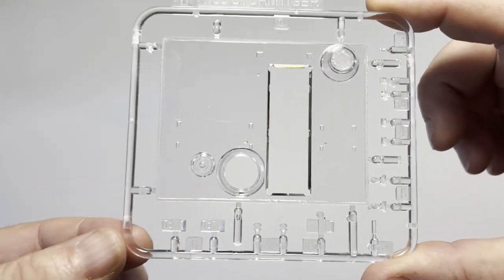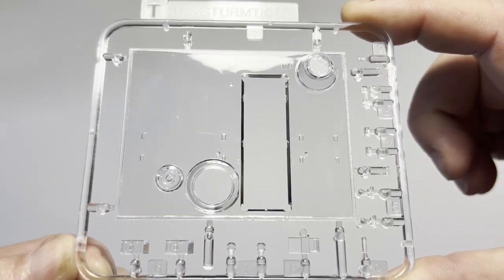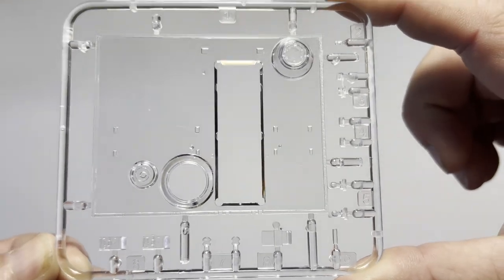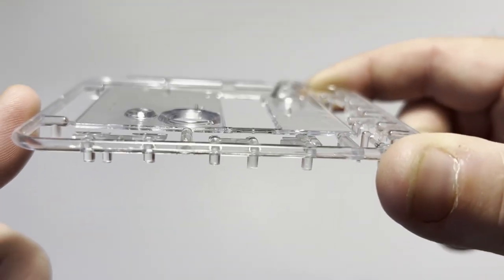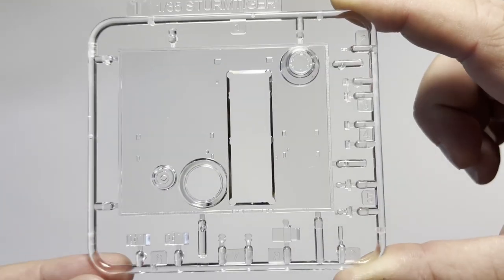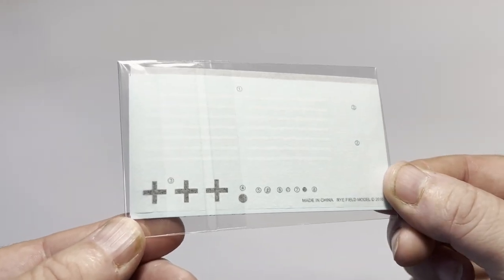The clear parts for this kit include the top plate of the casemate. As there is the partial interior included, this provides an ideal solution for many modelers to viewing all of the efforts you put in to build and weather the interior. I'd probably paint this myself but it's a welcome option from Ryefield. There's not much as far as decals for this kit but that's to be expected with a Sturmtiger.